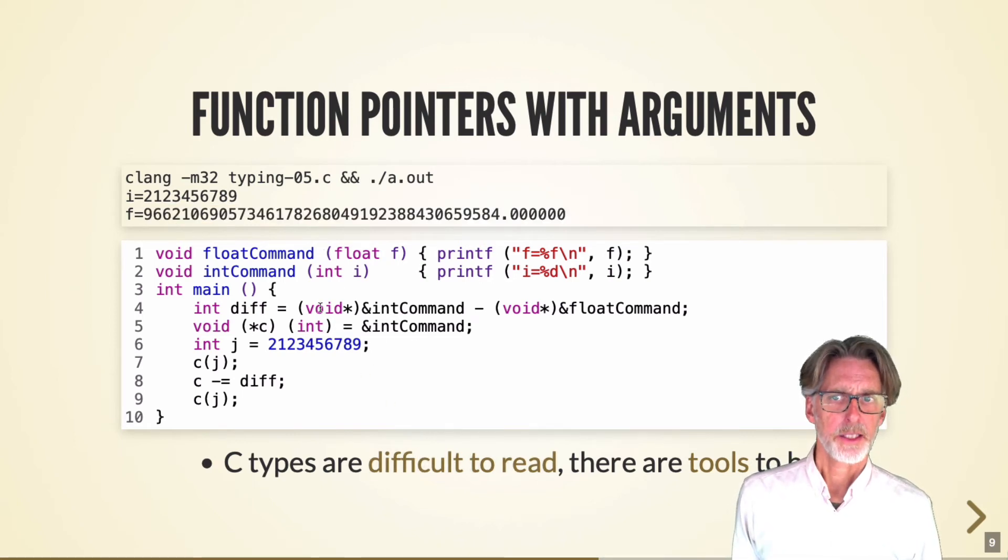It's worth pointing out that types in C may be difficult to read. There are actually tools that can help this. So the way I recommend you read types in C, it's sort of a spiral. You look at the variable being declared, and then you sort of spiral around. So in this case, C is a pointer to a function that expects an integer and returns void.